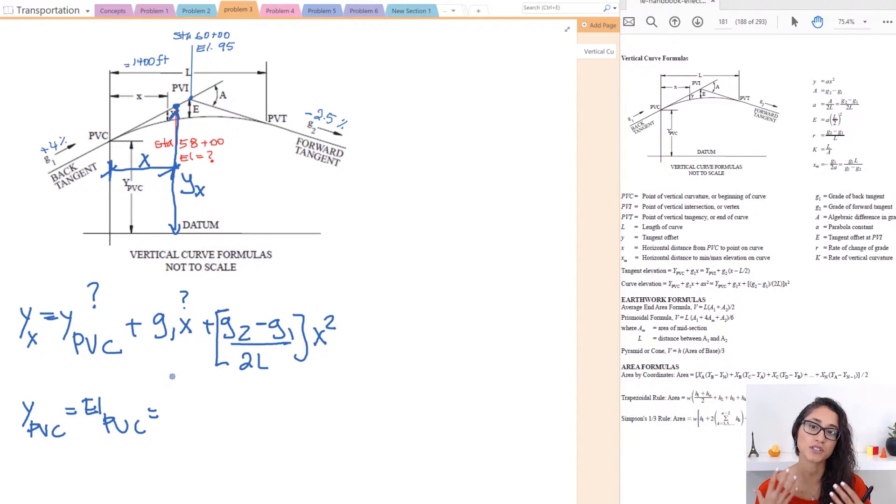So in the previous video I provided some equations that you should remember for the test. If you haven't watched it I will leave the link above somewhere here. You can just click on that and it will take you directly to that video. So on there we provided the equation for elevation at PVC and the elevation at PVT. Also the station at PVC and station at PVT because these equations are not given to you on the NCEES handbook. So make sure you check it out and make sure you write them down and try to remember them for the test because you will use them.